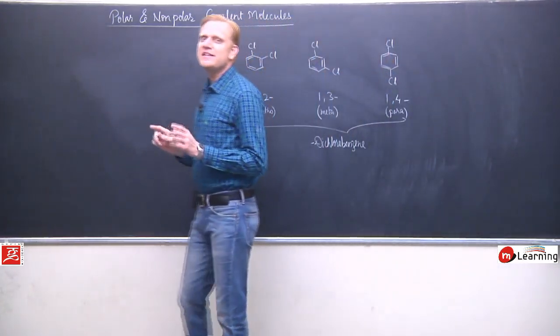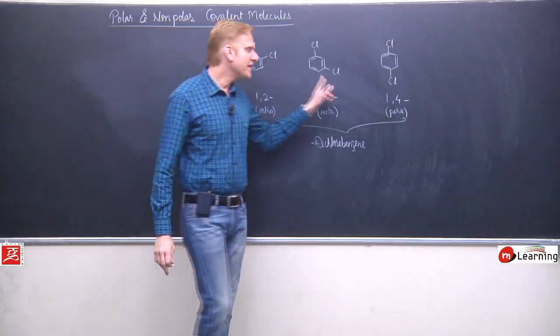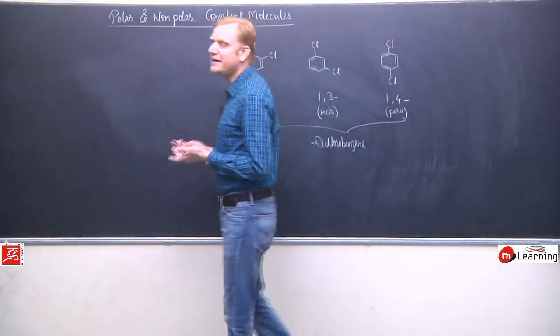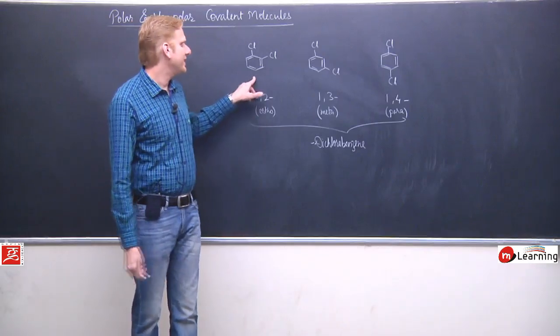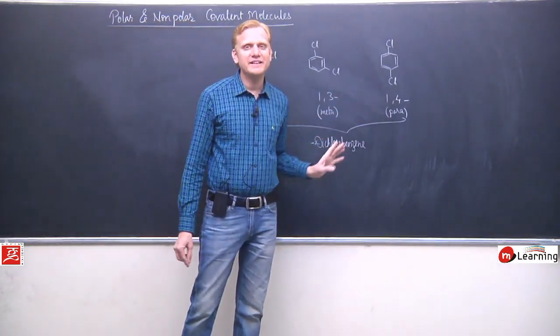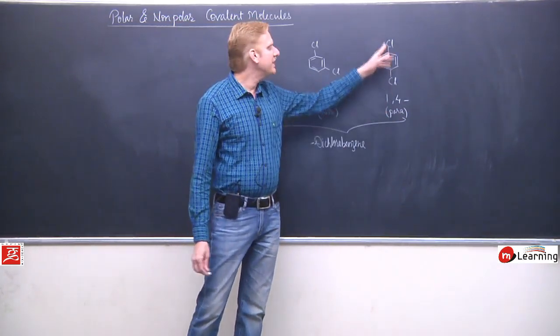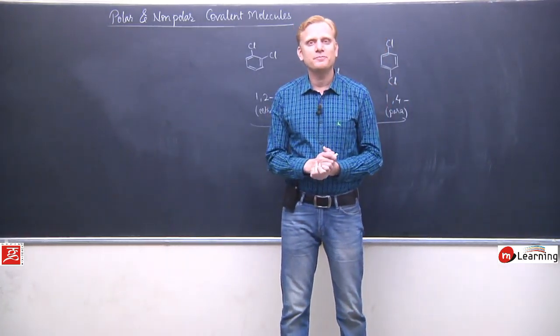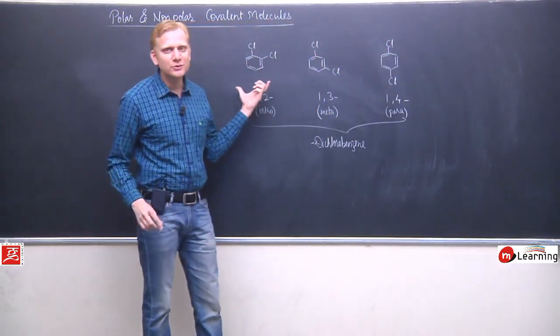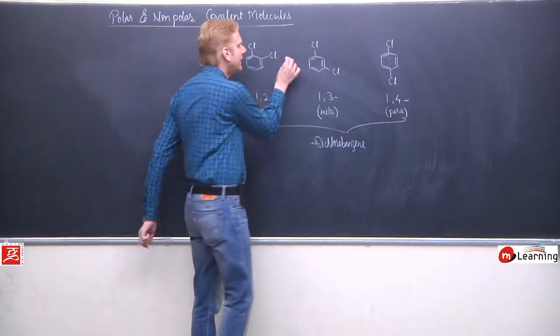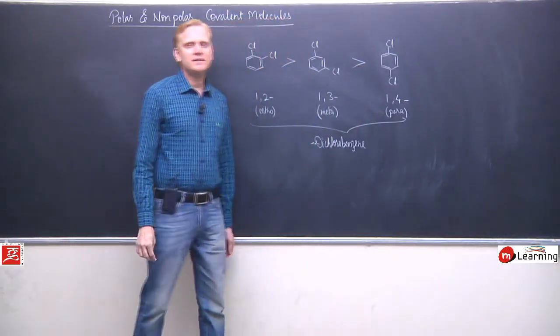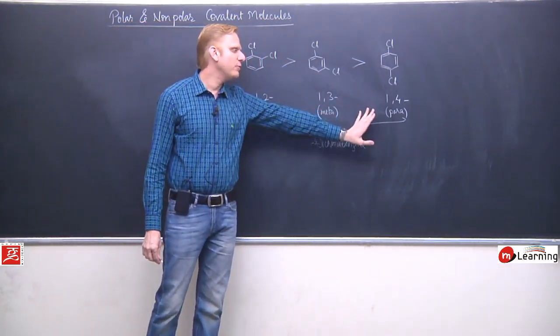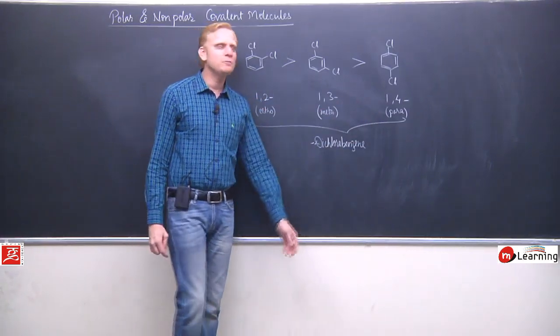As the angle increases, the resultant value will decrease. This is vector addition. You're comparing theta. Here the angle is 60 degrees, 120 degrees, 180 degrees. It's clear that here due to 180 degree angle, both vectors being exactly opposite, the dipole moment resultant would be zero. These two will be with non-zero values. If we're comparing dipole moment, it will be in the order: ortho or 1,2-dichlorobenzene will be maximum, and 1,4-dichlorobenzene will be minimum or zero. This is non-polar.